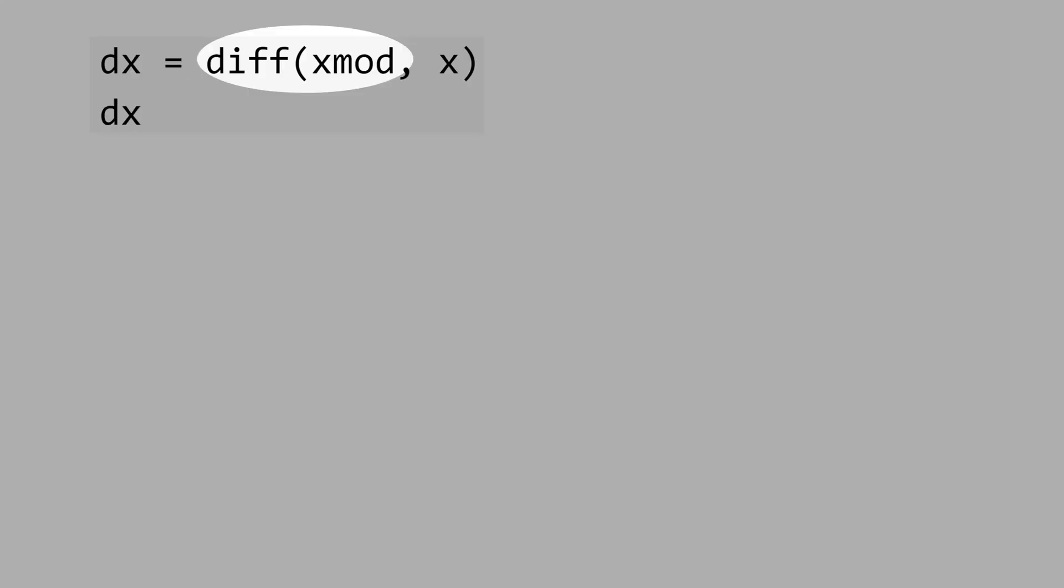Now, let's take the derivative of xModule, in terms of x. And this is the result. You have to understand, that you give a piecewise function to the computer to take the derivative.